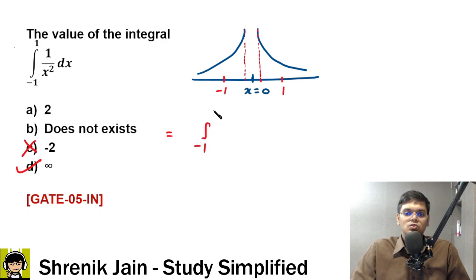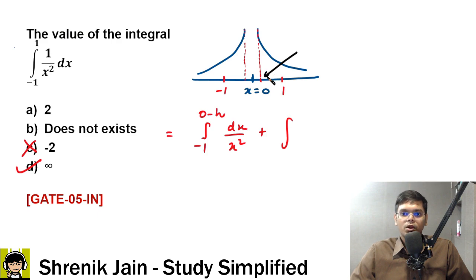And for that, integral -1 to 0 plus or minus, I'm coming from here now, so minus, okay, so 0 minus h, and then we have dx over x squared plus integral. This point, this point is not this point, this point, wait a second, this point I will tell you a little bit about.